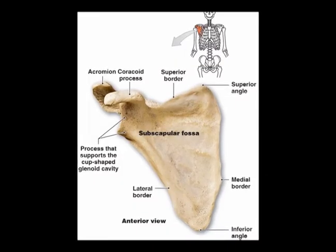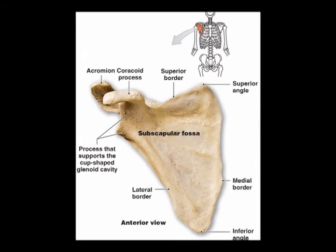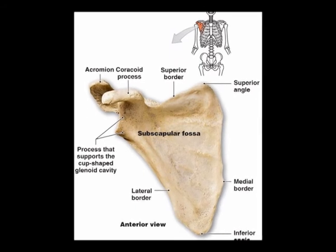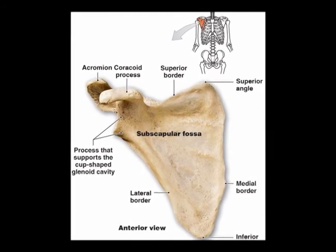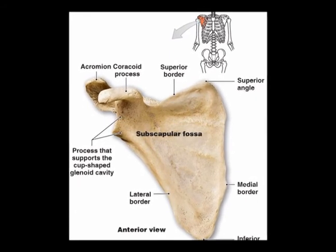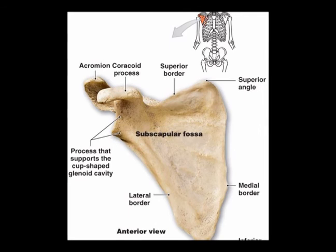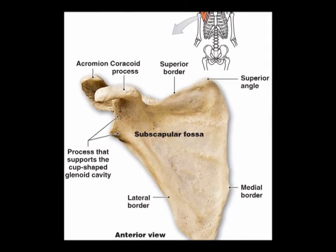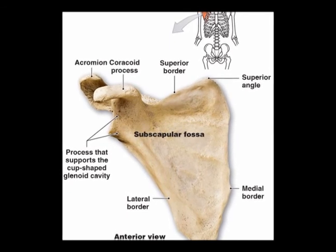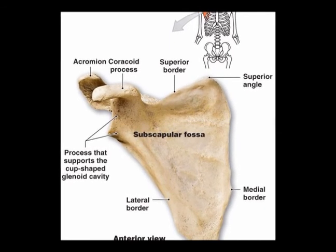Also located in the anterior side of the scapula is the subscapularis fossa. The subscapularis fossa is the origin point of the subscapularis muscle.